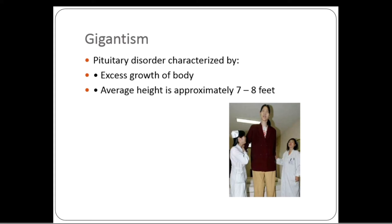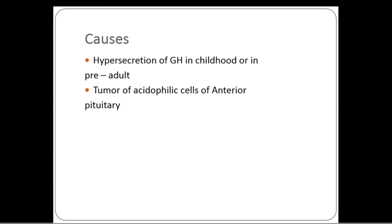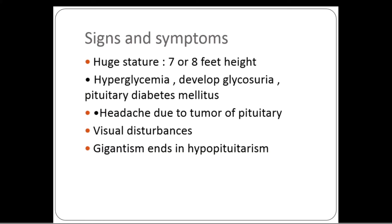Gigantism is a pituitary disorder characterized by excess growth of the body, with affected patients averaging between seven to eight feet in height. The main cause is hypersecretion of growth hormone in childhood and pre-adulthood, before the closure of the epiphyseal plates. After epiphyseal closure we get something different — acromegaly. A tumor of acidophilic cells of the anterior pituitary can also cause over-secretion of growth hormone.